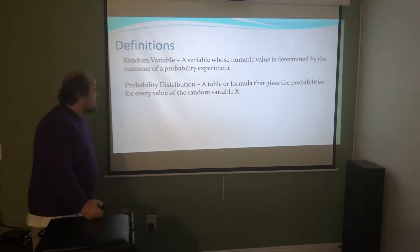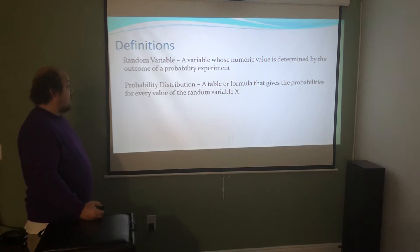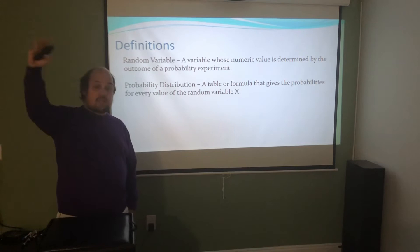Some definitions: a random variable is a variable whose numeric value is determined by the outcome of a probability experiment. A probability distribution is a table or formula that gives us the probabilities for every value of the random variable x. In general, we'll see these as tables showing the x value and the probability that the random variable takes on that x value.